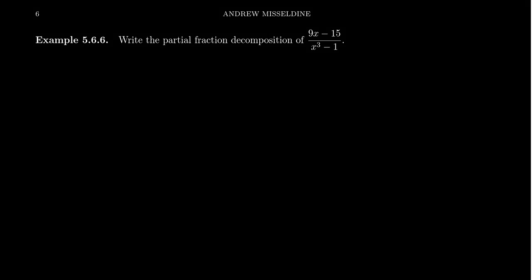Let us compute the partial fraction decomposition for 9x minus 15 over x cubed minus 1. This is a proper fraction with a linear polynomial on top and a cubic on the bottom. To factor the denominator, I notice that x cubed minus 1 is a difference of cubes, so I get x minus 1 and x squared plus x plus 1. This sits below 9x minus 15.